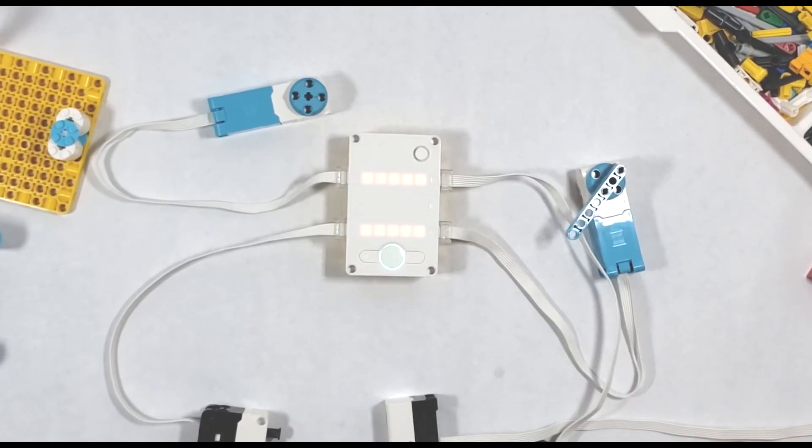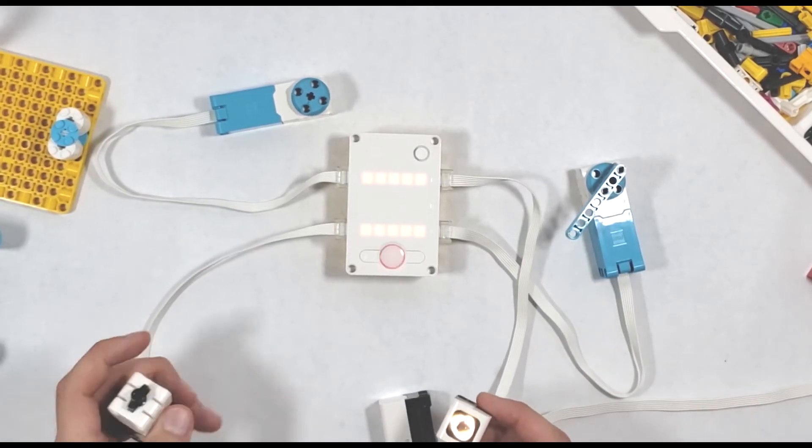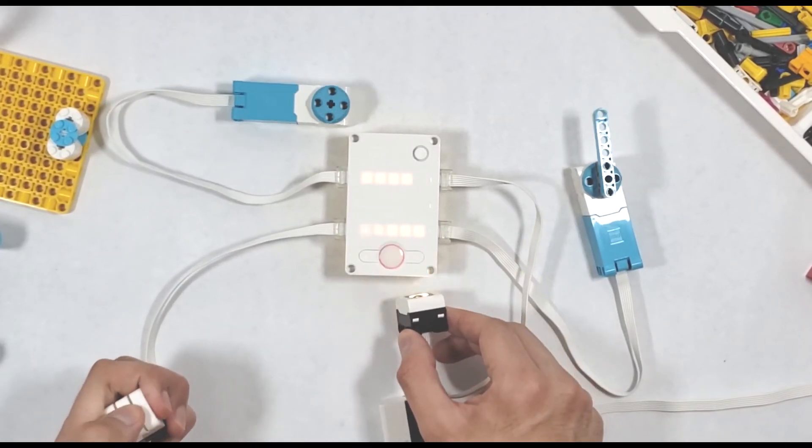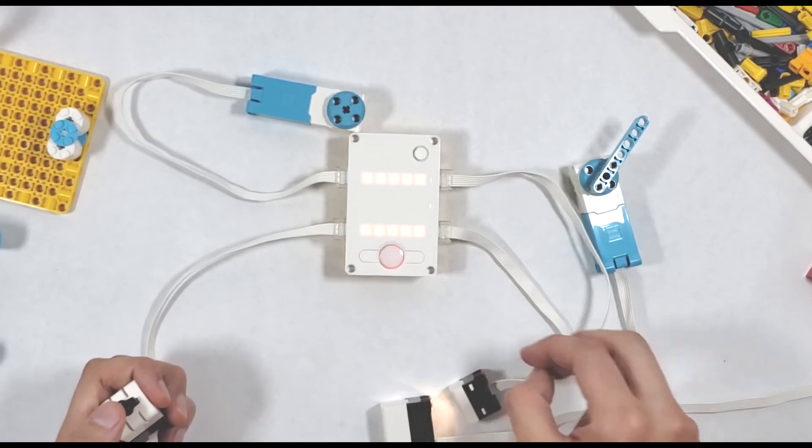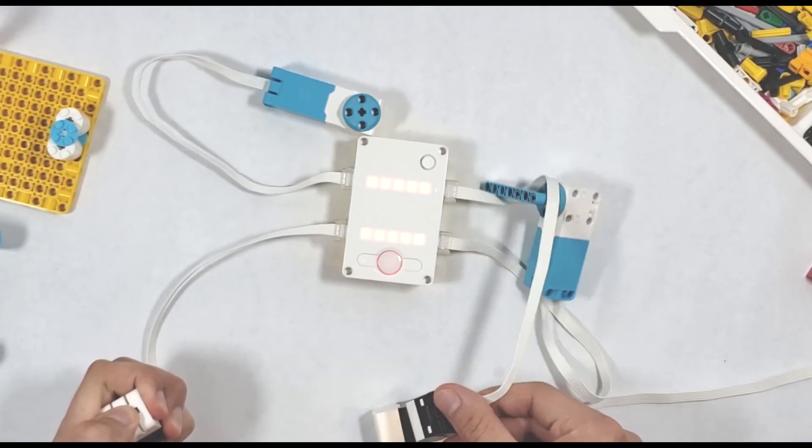It's possible to attach multiple motors and sensors at the same time, and that's really what makes the heart program so great: it's the simplest, most convenient way to experiment with the different components that you have in the Spike Prime kit.